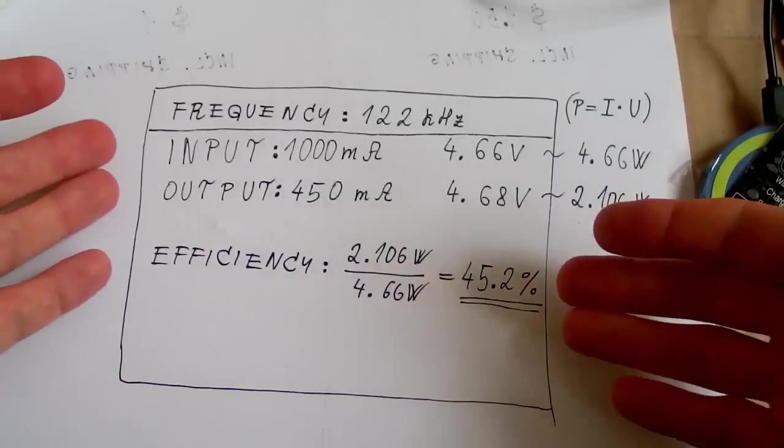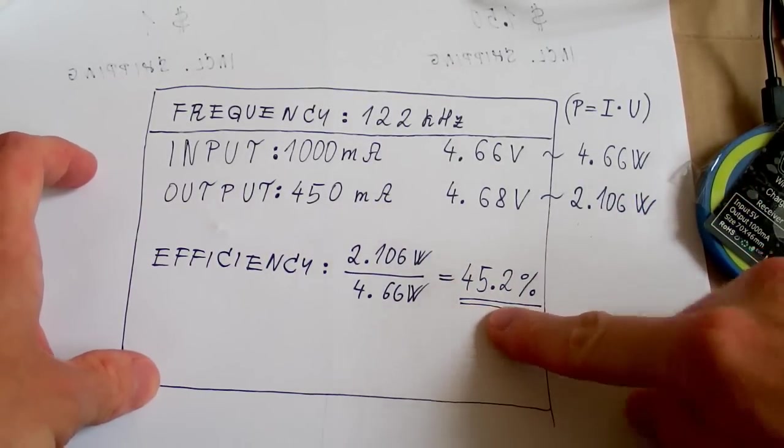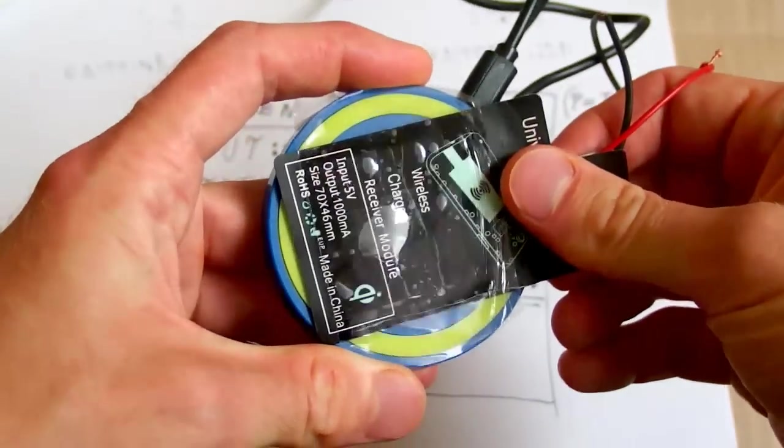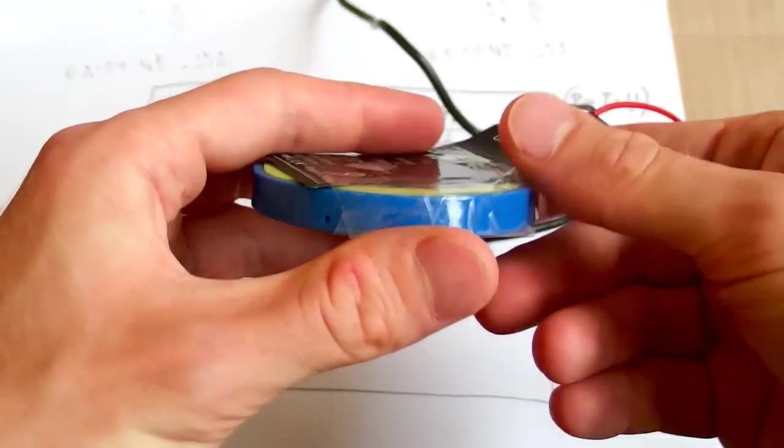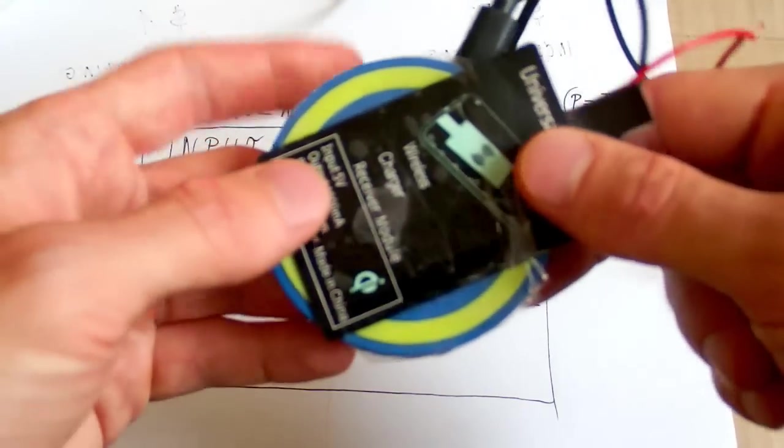So here are some data on it I have written down. And the efficiency is less than half. And this is in the best possible condition. So it's zero distance and a very good alignment. If there is a distance in between, even just few millimeters, the efficiency is going to be much lower.